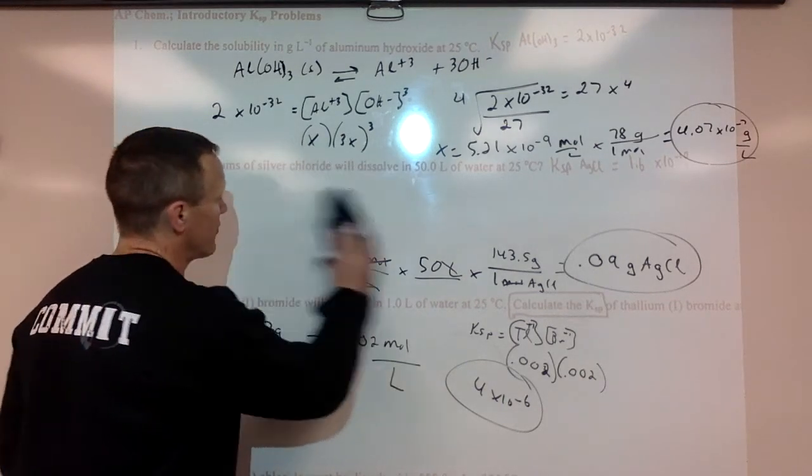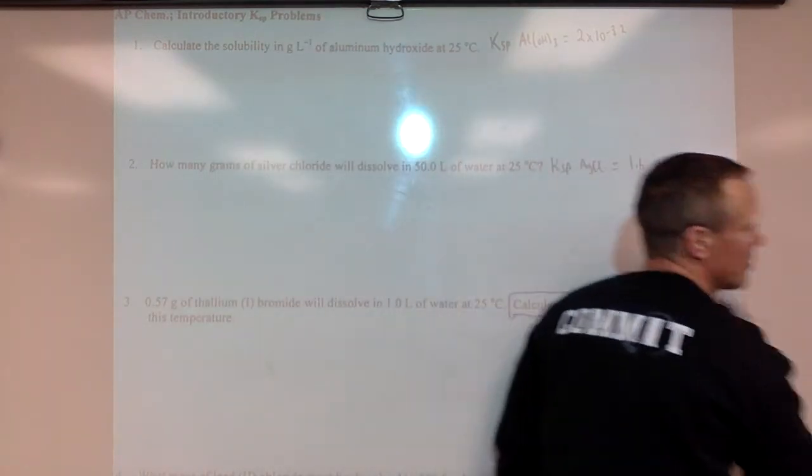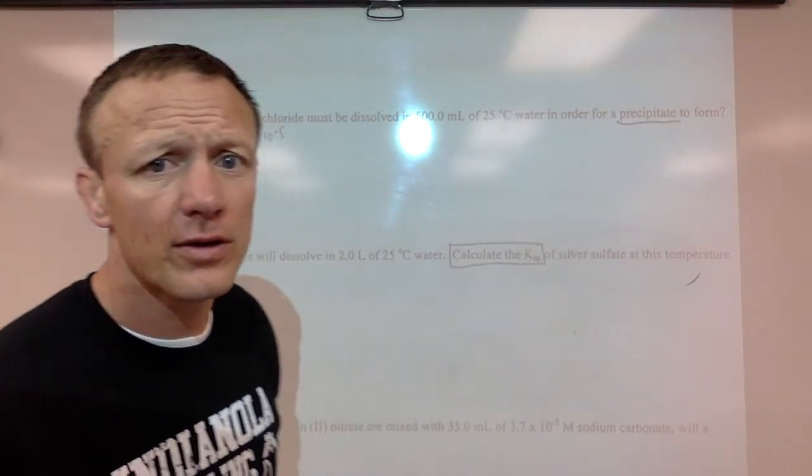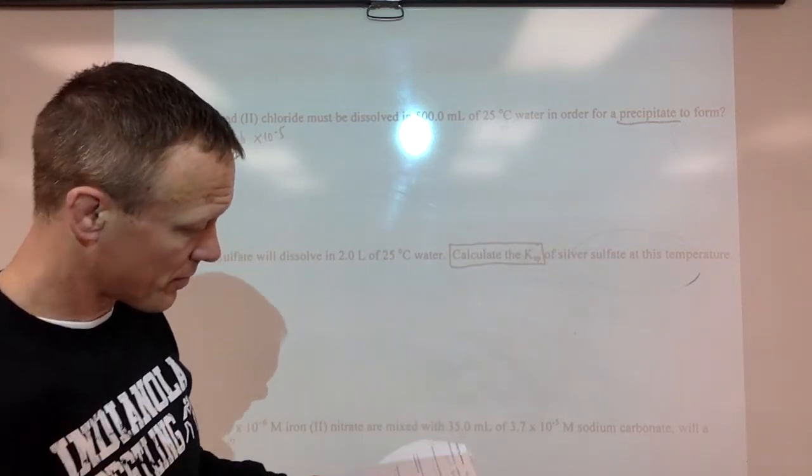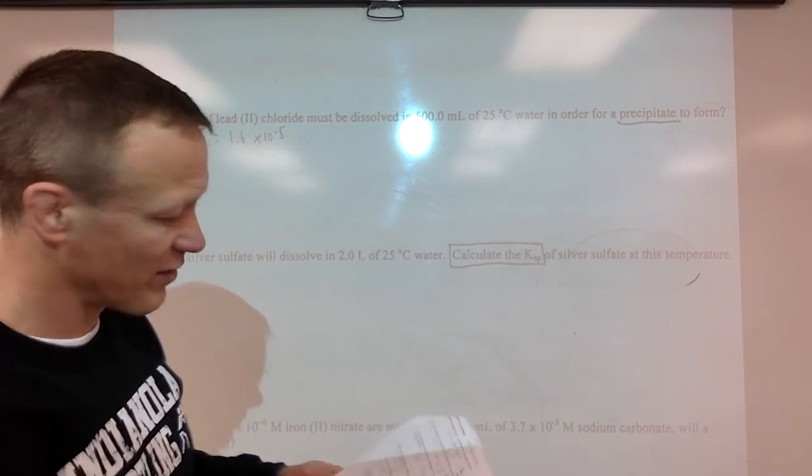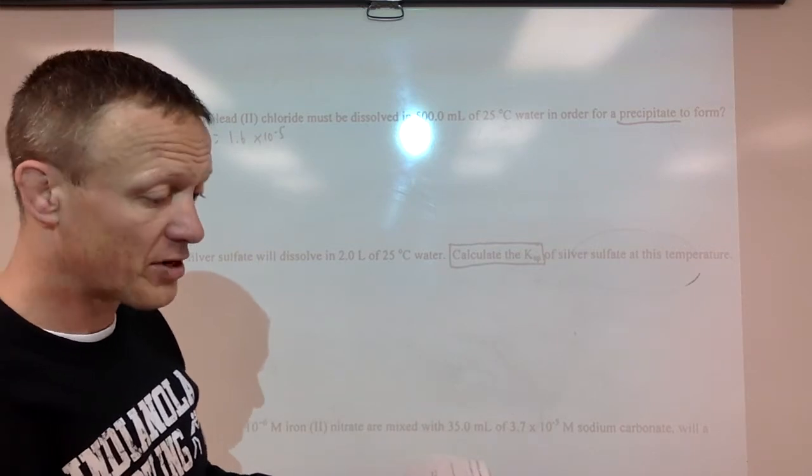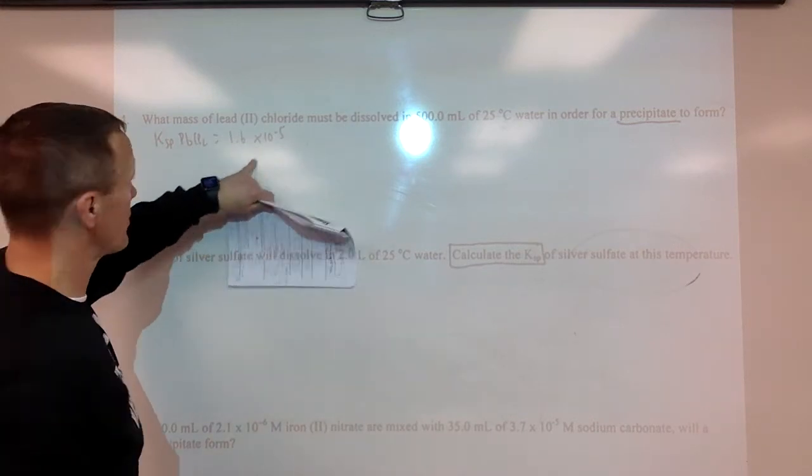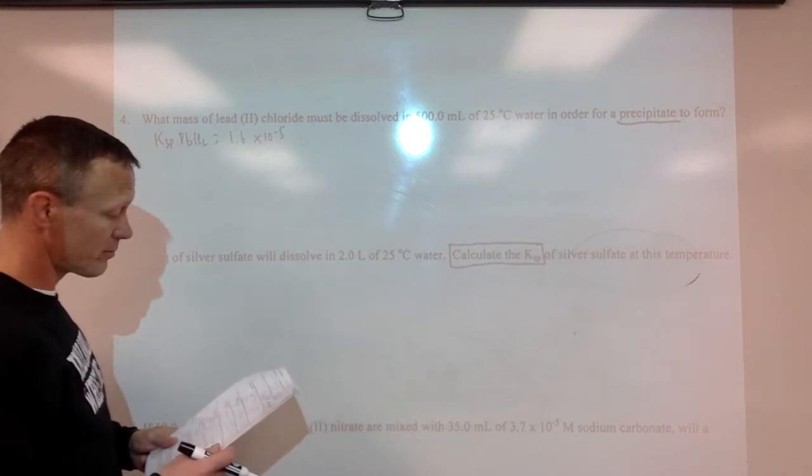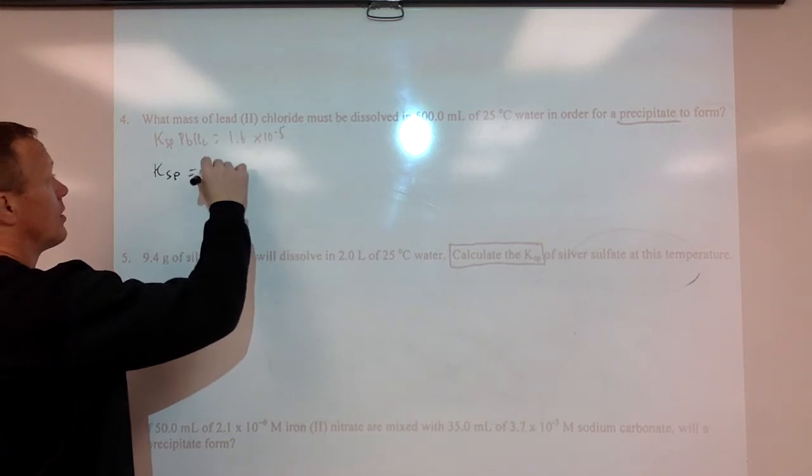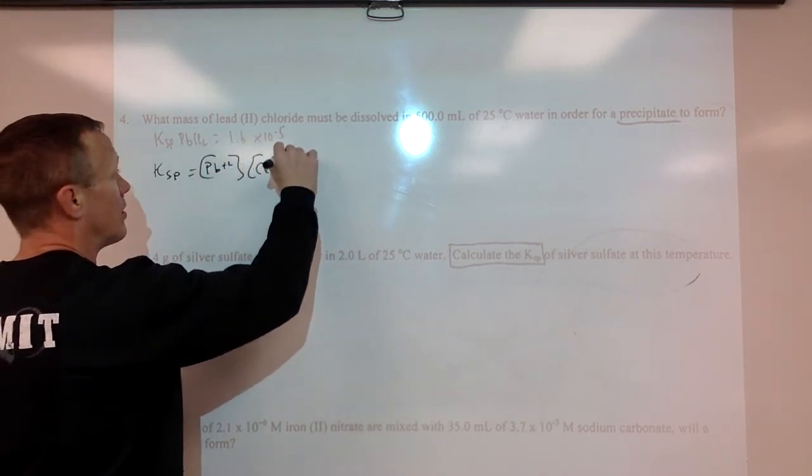I'll get two more problems in this video. Here's 4 and 5. That does say 500 milliliters right there with the glare. Number 4, what mass of lead chloride must be dissolved in 500 milliliters of 25 degrees Celsius water in order for precipitate to form? The temperature does matter, but this chart is at 25 degrees Celsius. Here's the KSP of lead chloride. Fairly big KSP, so a decent amount can dissolve in comparison to other things. So whenever it's asking amount that can be dissolved or solubility, we're always going to put in some values here.